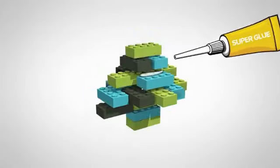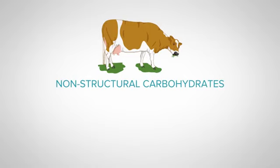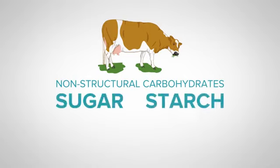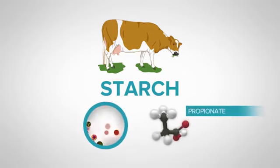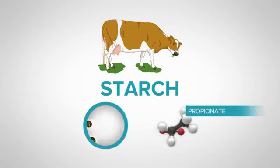Now let's look at what happens when a cow eats feeds that are high in non-structural carbohydrates — so that's the sugars and the starches. Feeds high in sugar include molasses and fodder beet, while feeds high in starch include cereal grains such as barley, wheat, or maize. The microbes that digest starch are different from the ones that digest structural carbohydrates. They primarily produce propionate as their waste product.